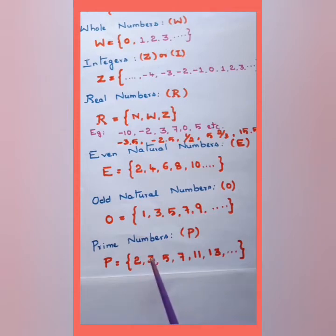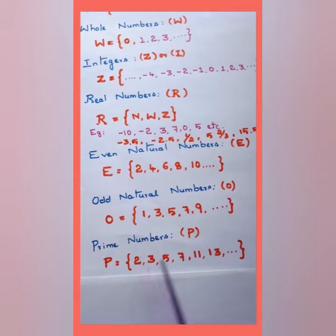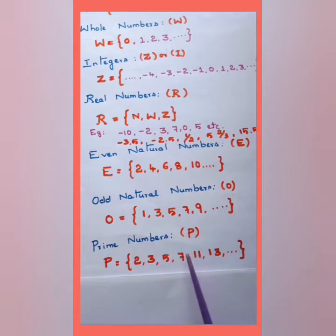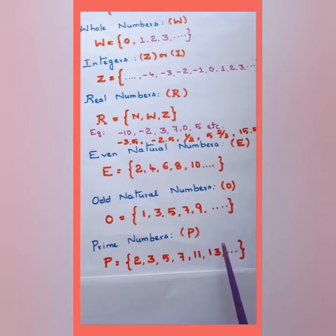For example, 2 is divided only by 1 and 2, so it is prime. Same with 3 and 5 and 7. We cannot take 4 as a prime number because 4 can be divided by 1, 4, and also by 2. So 4 is not a prime number.